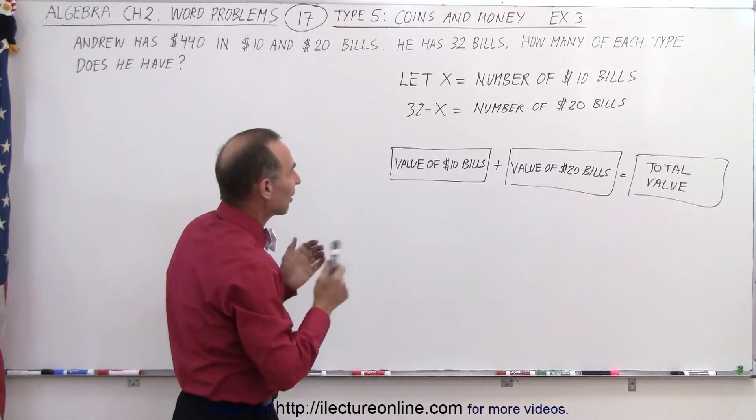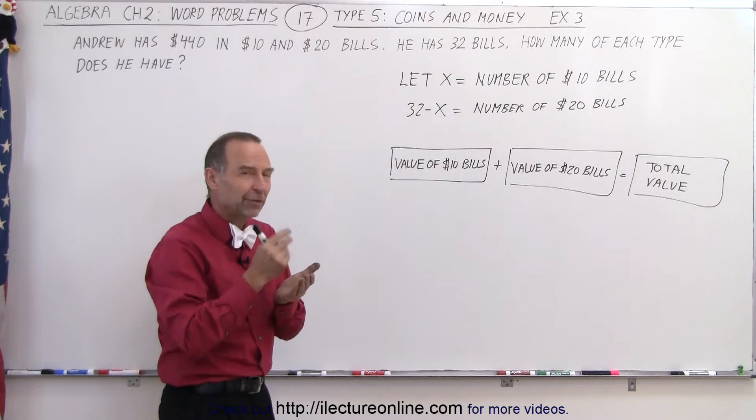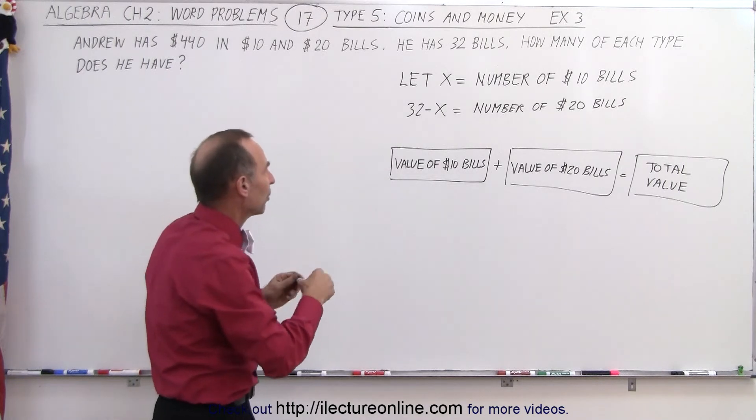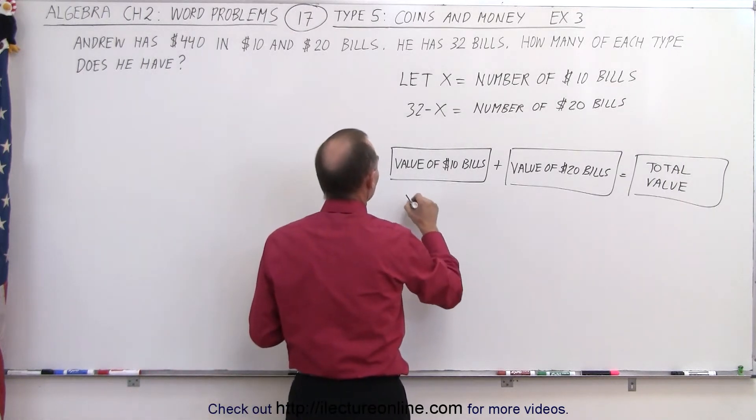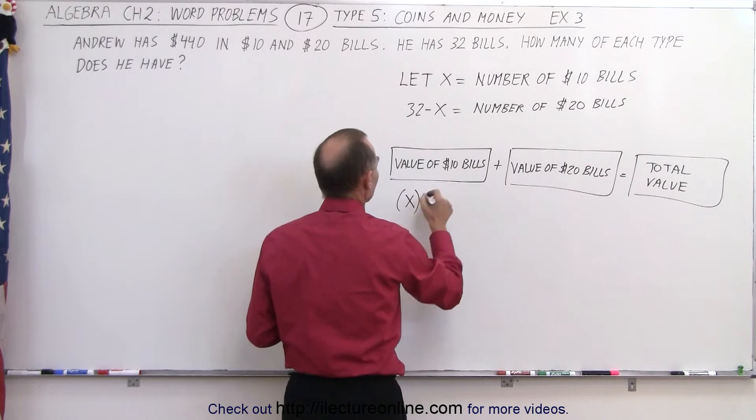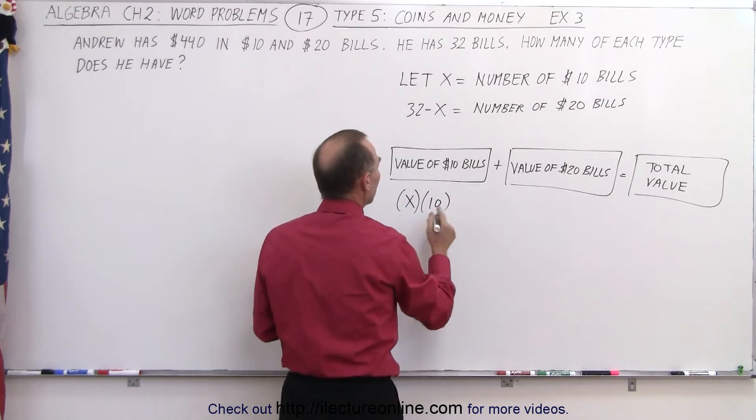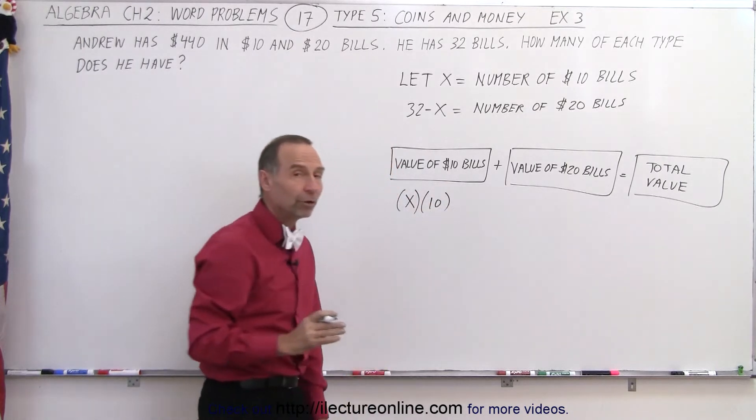Now to find the value of all the $10 bills, we put in the value of a single bill times the number of bills. So in this case, x, which is the number of $10 bills, times the value of each bill, will give us the total value of all the $10 bills.